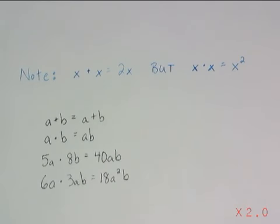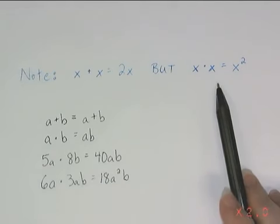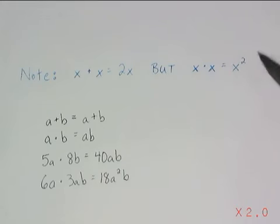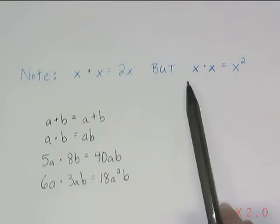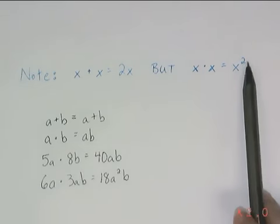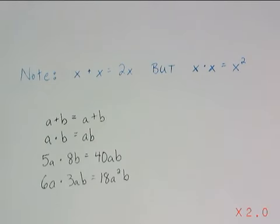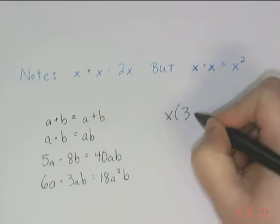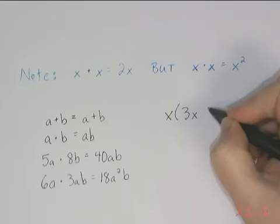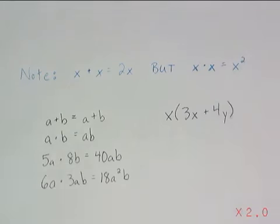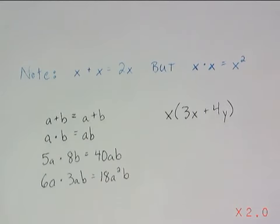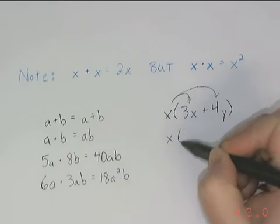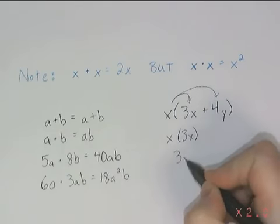So we have to make sure that we're keeping straight addition versus multiplication. Only like terms can be added or subtracted, but any terms can be multiplied. And if I'm multiplying two variables that are the same together, that's going to change the exponent. Take a look at this example: x multiplied by the quantity of 3x plus 4y. If I were to distribute in this case, x multiplied by 3x gives me 3x squared.